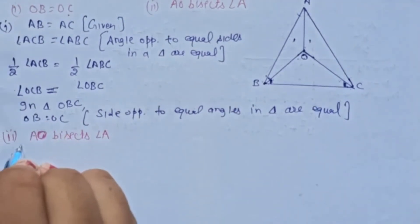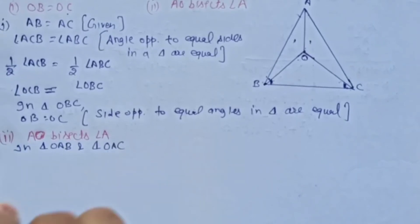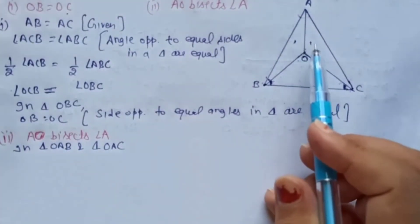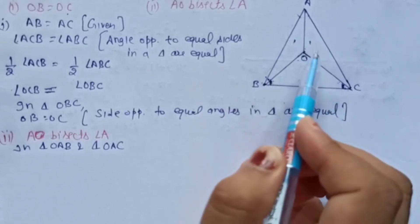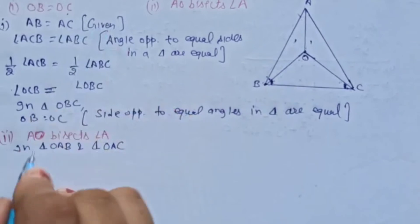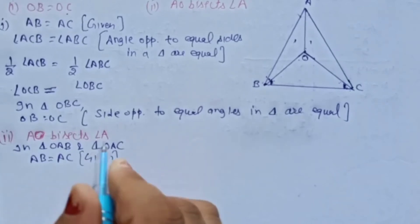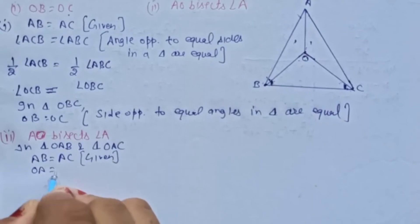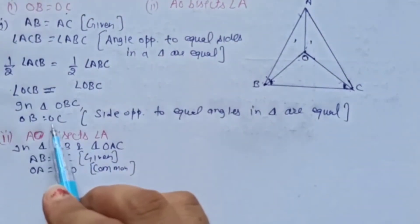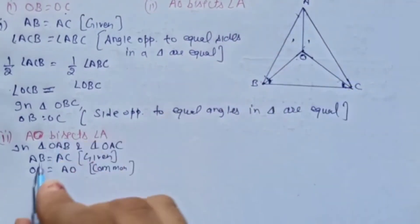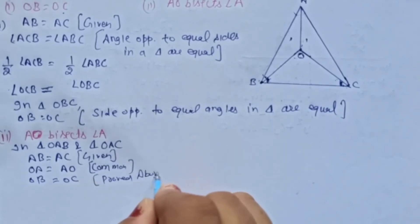To likhenge: In triangle OAB and triangle OAC. Dono triangle mein dekhenge. Pehli cheez: AB equal to AC — given. And second: OA is equal to OA — common. And third, hamne abhi abhi kya prove kiya? OB equal to OC — proved above.